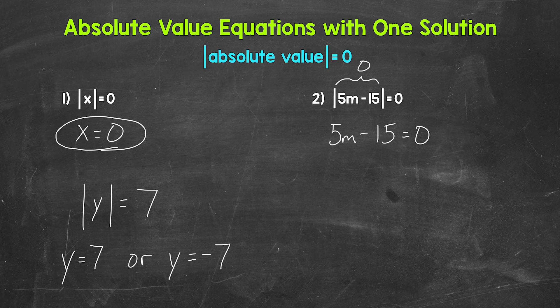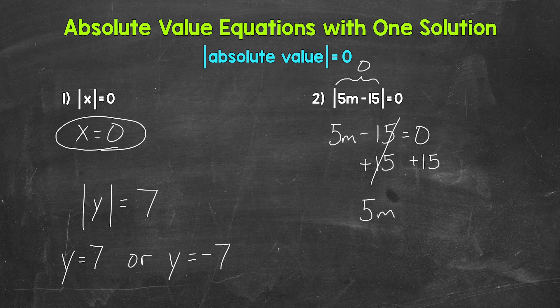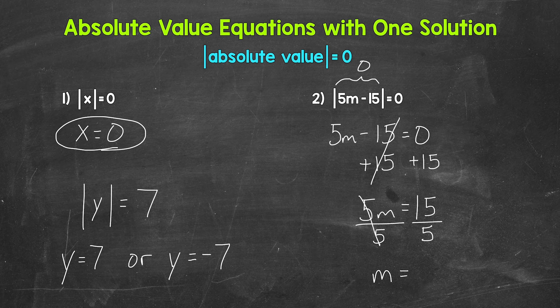So now we need to solve and isolate m. We need to undo the subtraction first, so let's add 15 to both sides of the equation. The 15s on the left side cancel each other out, so we have 5m equals zero plus 15, which gives us 5m equals 15. Let's divide both sides by 5. These 5s cancel each other out, so m is now isolated, and 15 divided by 5 gives us 3. So m equals 3 — that's our one solution.